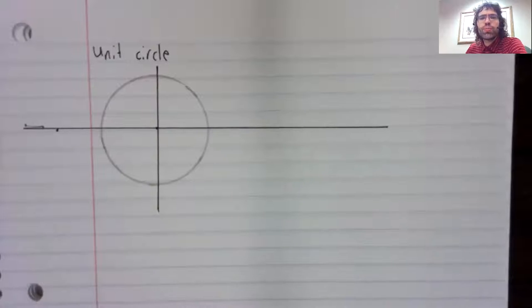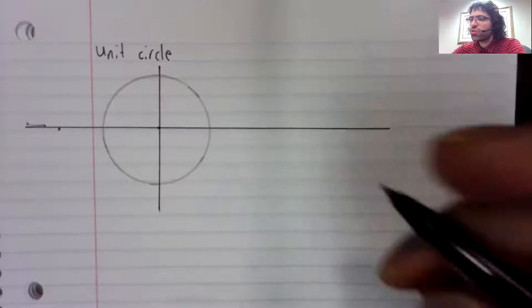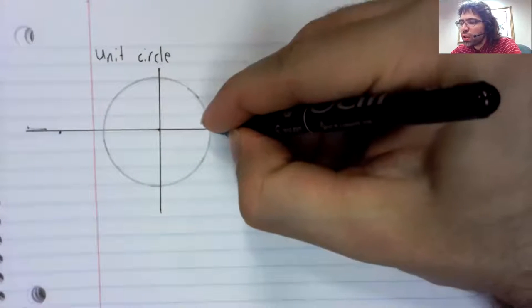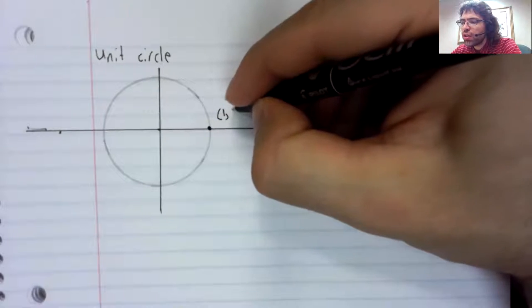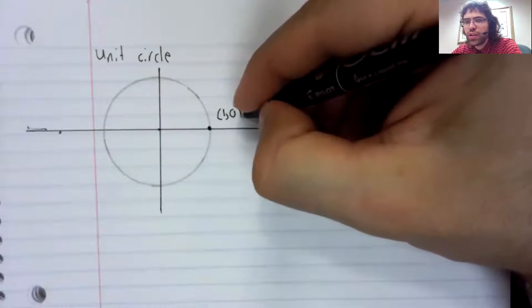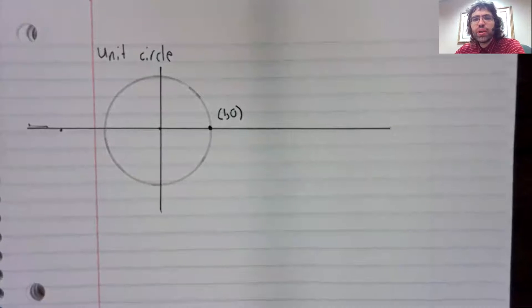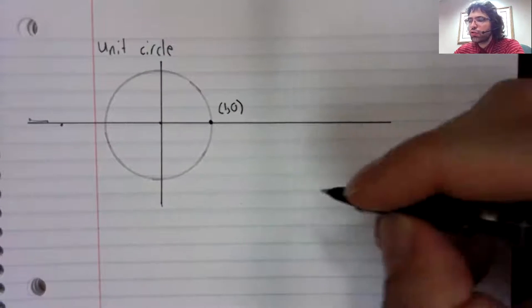We'll start with the unit circle, the circle centered at the origin with radius one. This is the point (1,0).